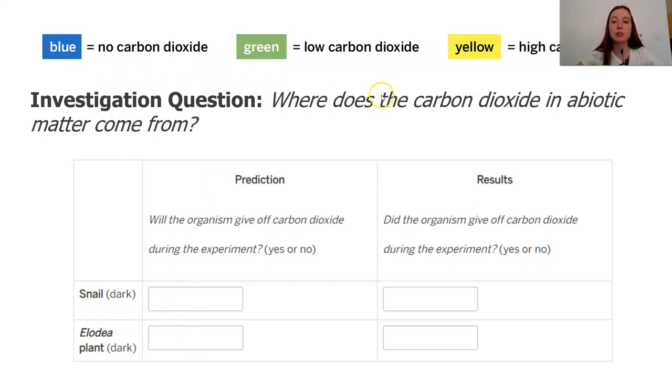Remember, we are going to be looking to see if the water turns green or yellow to indicate that either low amounts or high amounts of carbon dioxide have been produced. After you've made your prediction, go ahead and watch the investigation and make sure that you record your results. Look for whether the snail and the elodia are producing carbon dioxide and having a color change in their water to signify this.